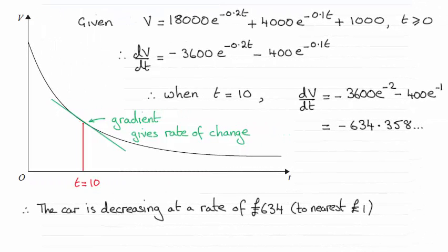Hi there. So for this part of the question, we were asked to work out the rate that the car was decreasing to the nearest pound when t equals 10. And you can see the answer is 634 pounds to the nearest pound. So how do we do this?